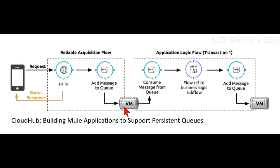If the reliable acquisition flow cannot put the message into the VM queue, it ensures that the message is not lost by returning an unsuccessful response to the client, so that the client can retry the request.